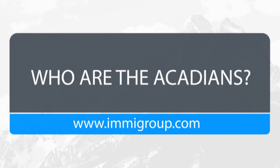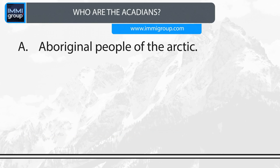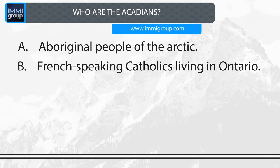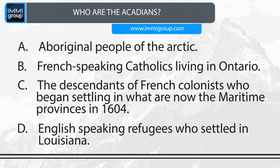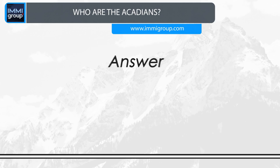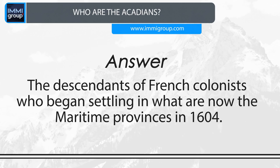Who are the Acadians? A. Aboriginal people of the Arctic. B. French-speaking Catholics living in Ontario. C. The descendants of French colonists who began settling in what are now the maritime provinces in 1604. D. English-speaking refugees who settled in Louisiana. Answer: The descendants of French colonists who began settling in what are now the maritime provinces in 1604.